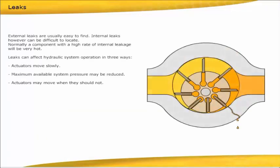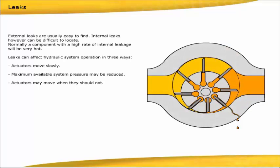External leaks are usually easy to find. Internal leaks, however, can be difficult to locate. Normally, a component with a high rate of internal leakage will be very hot. Leaks can affect hydraulic system operation in three ways: actuators move slowly, maximum available system pressure may be reduced, actuators may move when they should not.